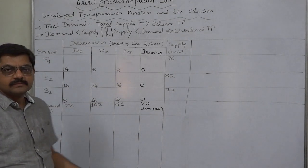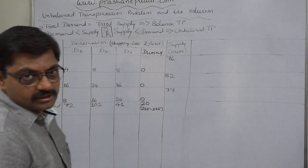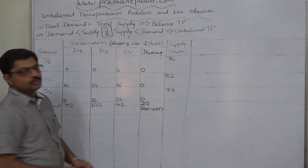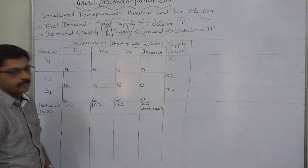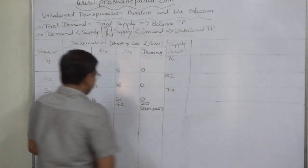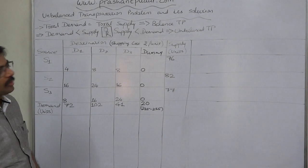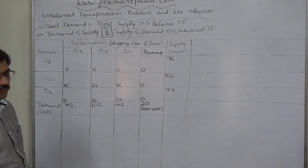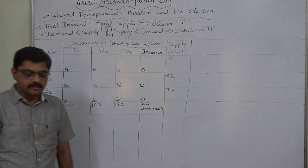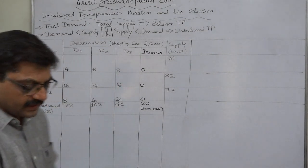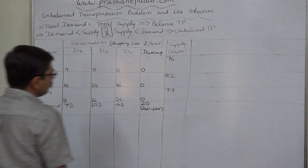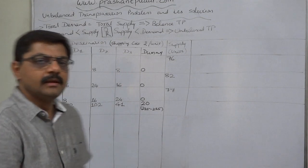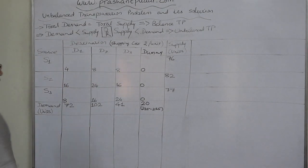Now the transportation problem is a balanced transportation problem and we can solve it. Let us solve this problem through VAM — Vogel's Approximation Method. In VAM, we calculate penalties for each row and column, and the row or column with the highest penalty is selected. In that selected row or column, the cell with the lowest cost is allocated the quantity.